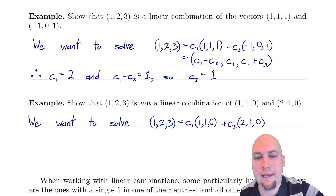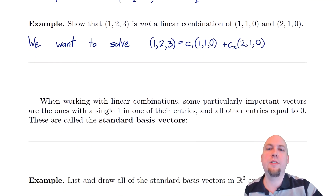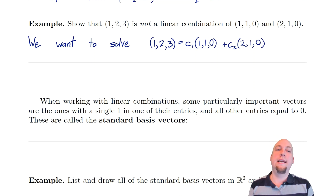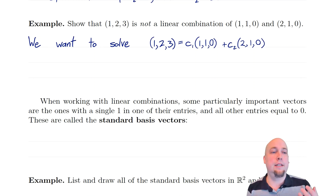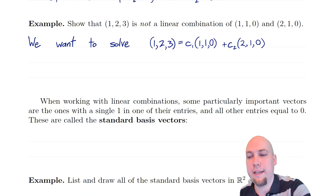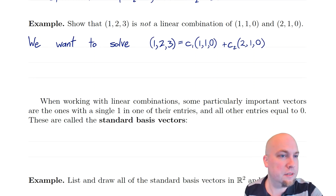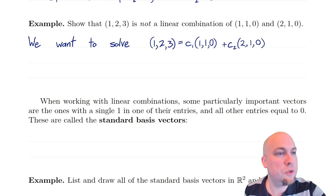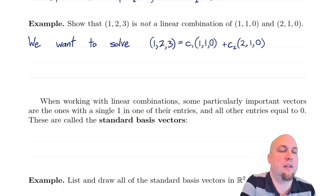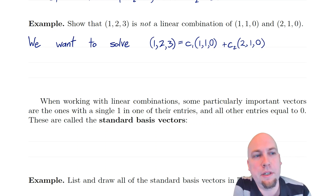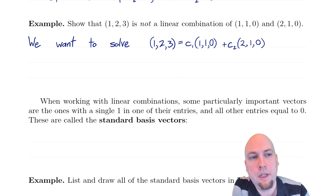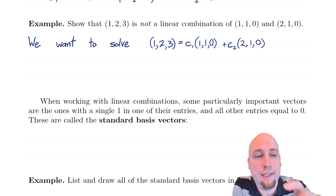Now let's do another example — let's show that [1,2,3] is NOT a linear combination of two other vectors. This time my starting vectors are [1,1,0] and [2,1,0], which is different from the previous example. I'm going to show that [1,2,3] is not a linear combination of these two vectors.